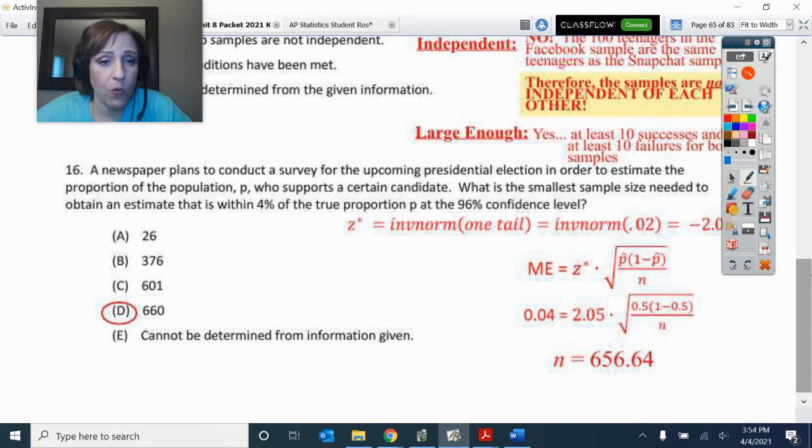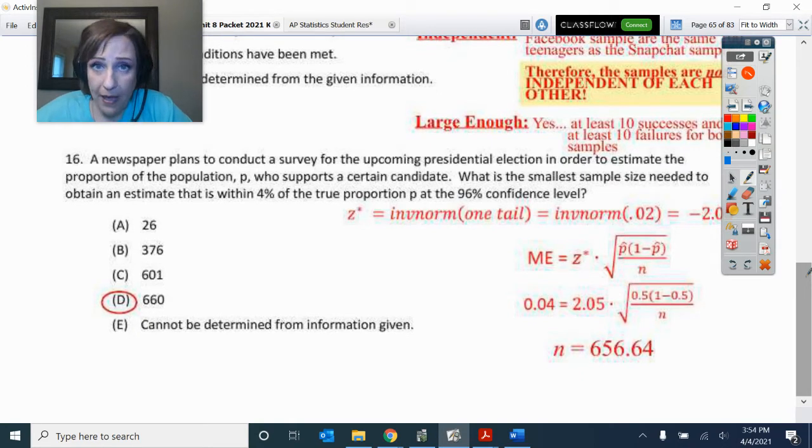Number six was another one of these problems where you had to do the math. So you want to make sure you can do that where we are asking for the sample size. We are solving for n. Now let's make sure that this was a proportion problem. So we were doing a Z star for our critical value, the inverse norm of one tail.